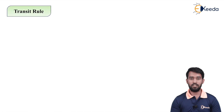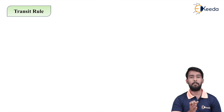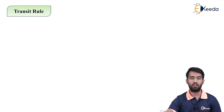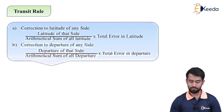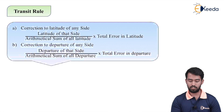The next rule is the Transit rule. We have seen Bowditch rule, which is applied based on the length of the line. Now the Transit rule: the correction to the latitude of any side — what is the formula?